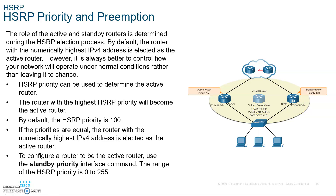Number three: by default, the router with the highest IPv4 address will become the active default gateway — HSRP looks at both routers and selects the one with the highest address. You probably don't want that behavior though. To change it, set the priority number higher than 100, since 100 is the default. We typically use 150 or higher.